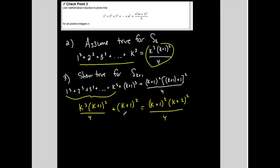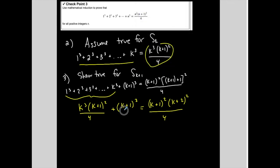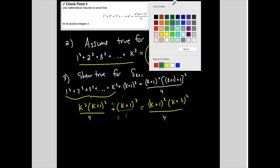Let's see if we can show this. The right-hand side is a single fraction. The left-hand side is not, so I'm going to start by bringing them together into a single fraction with common denominator 4.